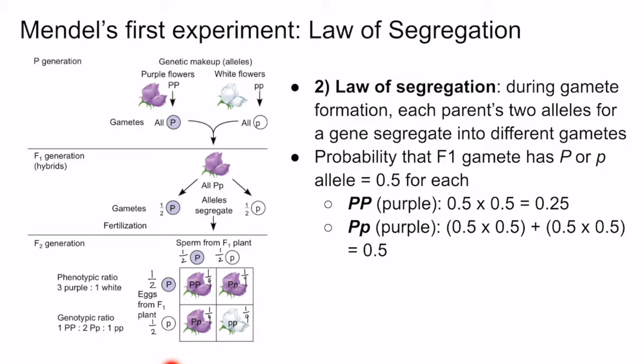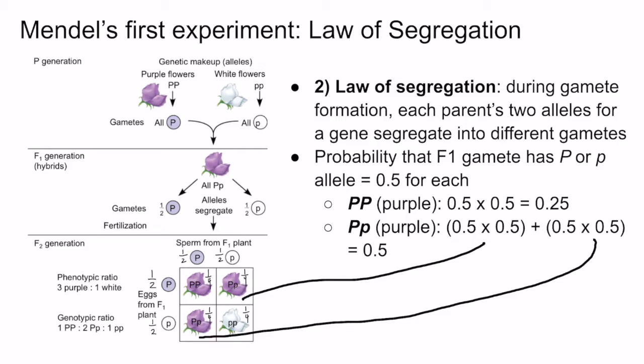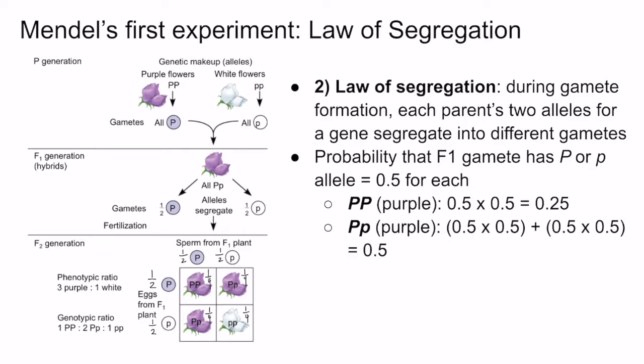An F2 heterozygote can either inherit the purple allele from the female parent and the white allele from the male parent, or it can inherit the white allele from the female parent and the purple allele from the male parent. Because there are two possibilities for the F2 heterozygote to have that genotype, we add these two probabilities to find the total probability that an F2 organism will have the big P, small p genotype, giving an overall probability of 0.5. Then the small p, small p genotype similarly has a probability of 0.25 in the F2 generation.